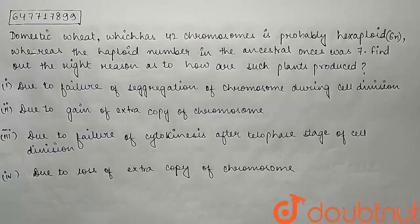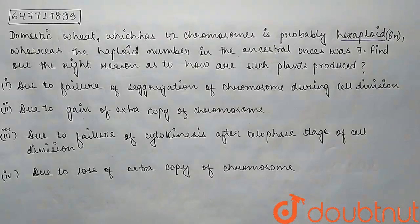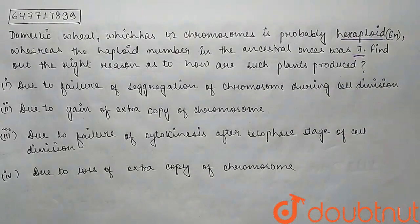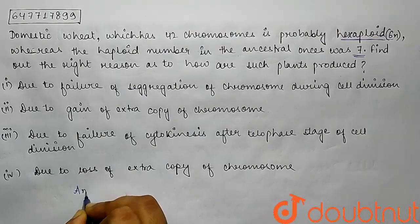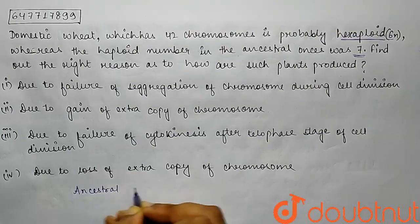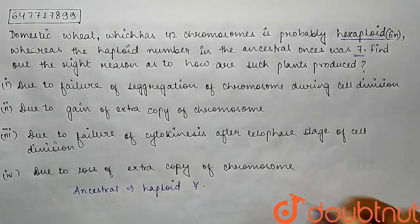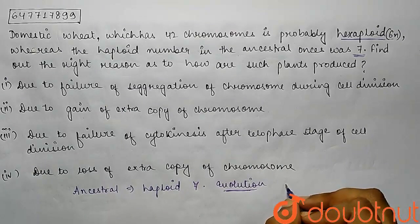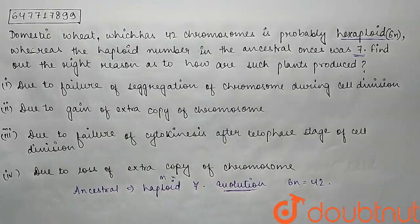Domestic wheat, which has 42 chromosomes, is probably hexaploid, whereas the haploid number in the ancestral ones was 7. Find out the right reason as to how such plants are produced. The question is asking how wheat evolved from an ancestor whose haploid number was 7 to become hexaploid with 42 chromosomes, where n equals 7. This is about the evolution of ploidy number.